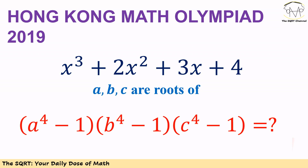Hello everyone. In this video we are going to talk about another problem from the Hong Kong Math Olympiad from 2019. In this problem we have an expression written as x cubed plus 2 times x squared plus 3 times x plus 4, and we know a, b and c are roots of this expression.